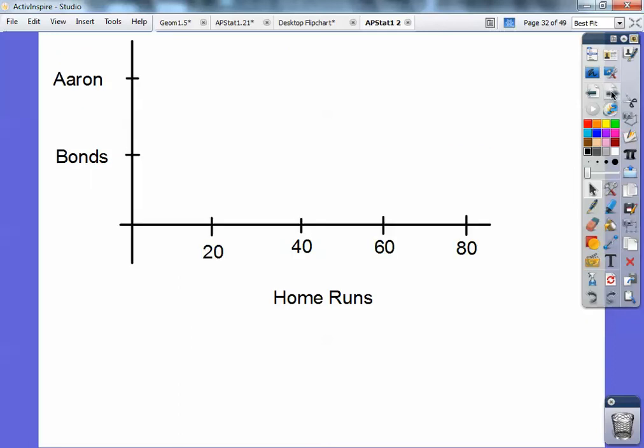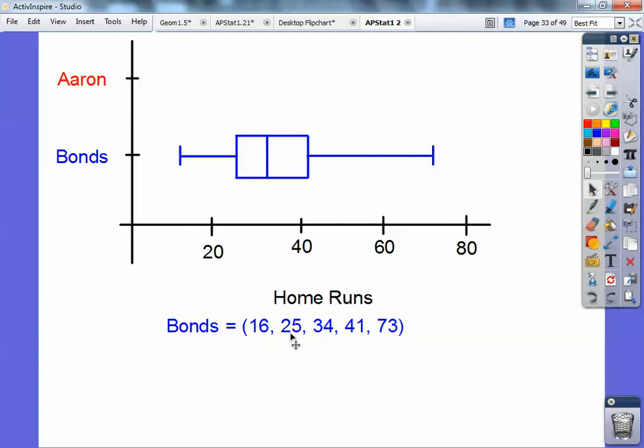All right. So here's an example with Bonds. So go ahead and make that chart. Notice this right here is the numbers that includes everybody's home runs. So I went from zero to, to cover Bonds' 73, I went up to 80 right there. So these boxes come from, this 25 is this edge of this box. So this is my 25 right there. This is my median. This is 34. So that's this one right here. And this is quartile three, the 41 right there. Here's the small number. It extends out there to the 16. Here's the big number. It extends out there to the 73.